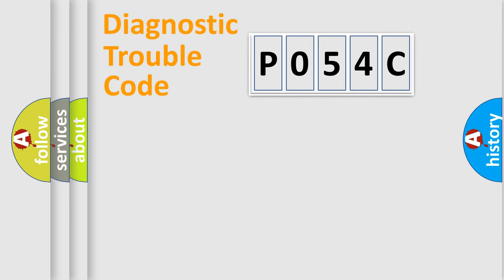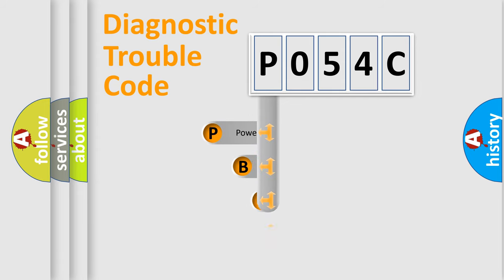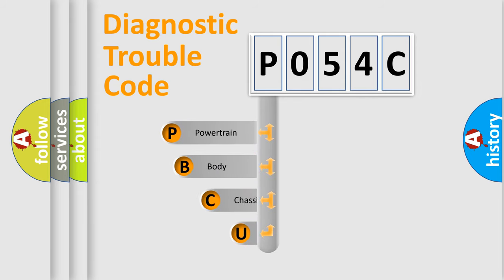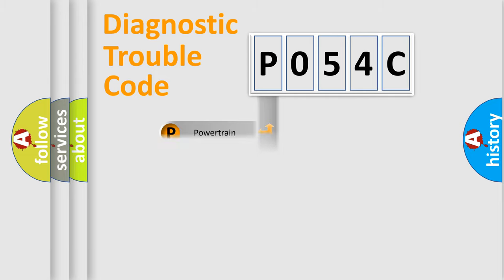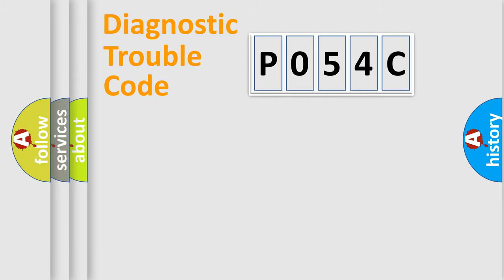First, let's look at the history of diagnostic fault code composition according to the OBD2 protocol, which is unified for all automakers since 2000. We divide the electric system of the automobile into four basic units: Powertrain, Body, Chassis, and Network.